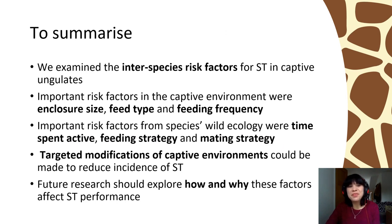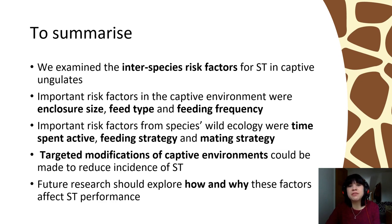To summarise: we examined interspecies risk factors for stereotypic behaviour in captive ungulates. We found important risk factors from the captive environment — namely enclosure size, feed type, and feeding frequency — and from species' wild behavioural ecology — time spent active, feeding strategy, and mating strategy. This work should allow targeted modifications of captive environments to reduce stereotypic behaviour, and future research should explore how and why these factors affect stereotypy.